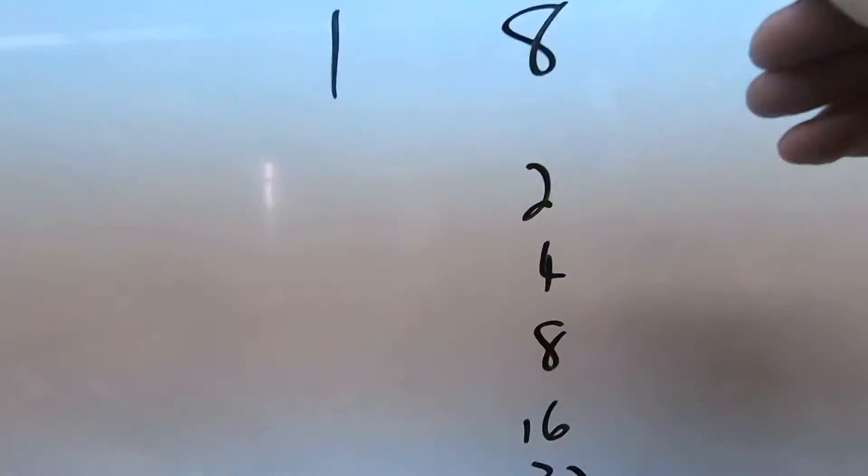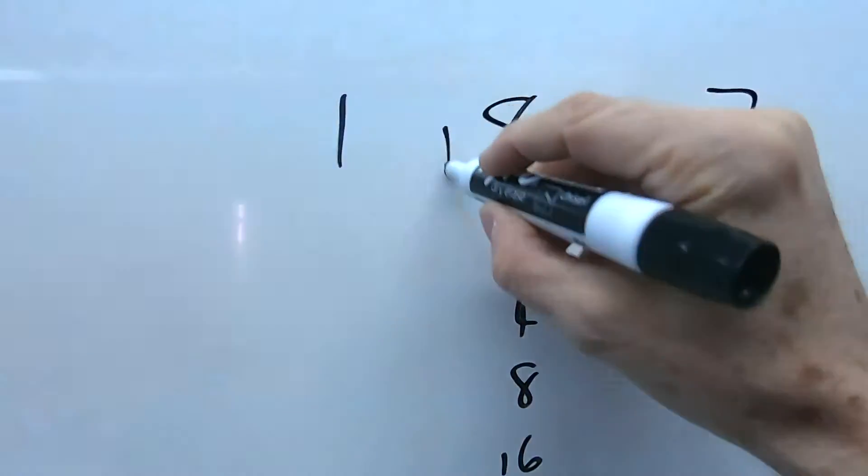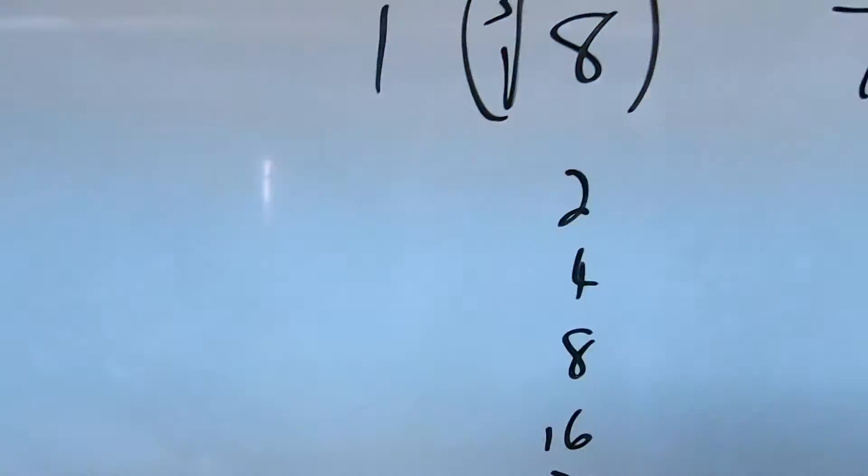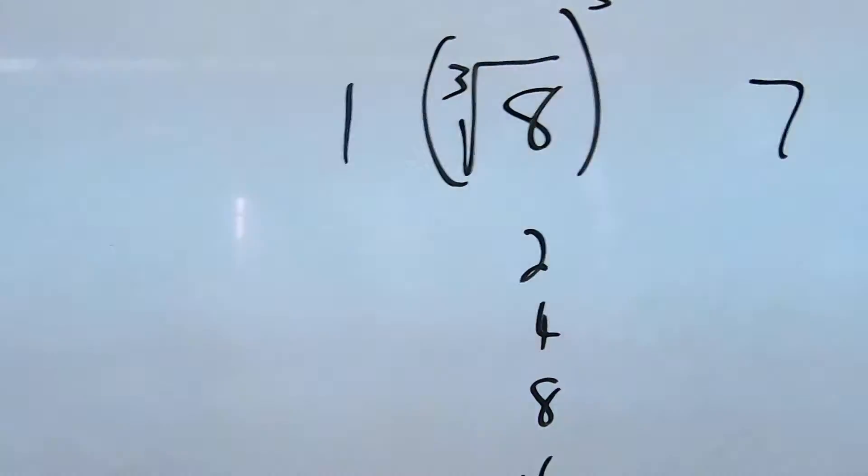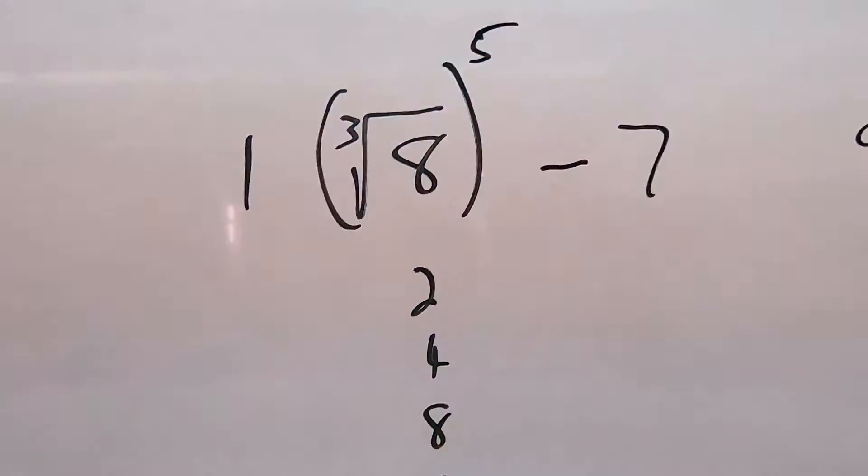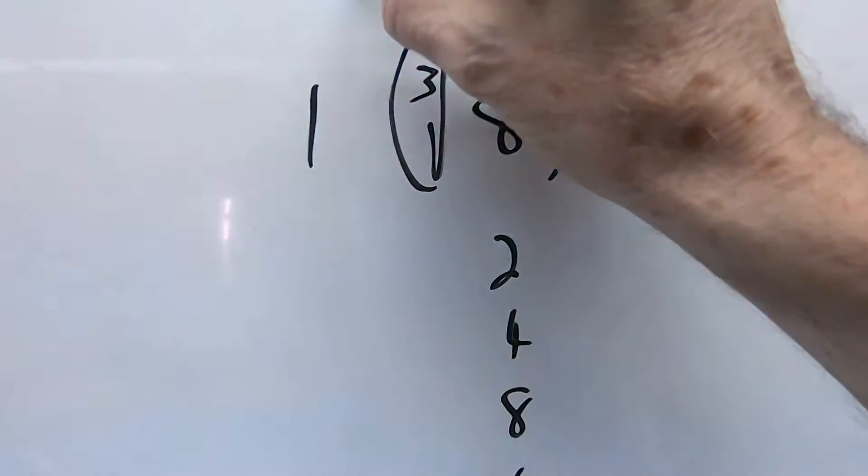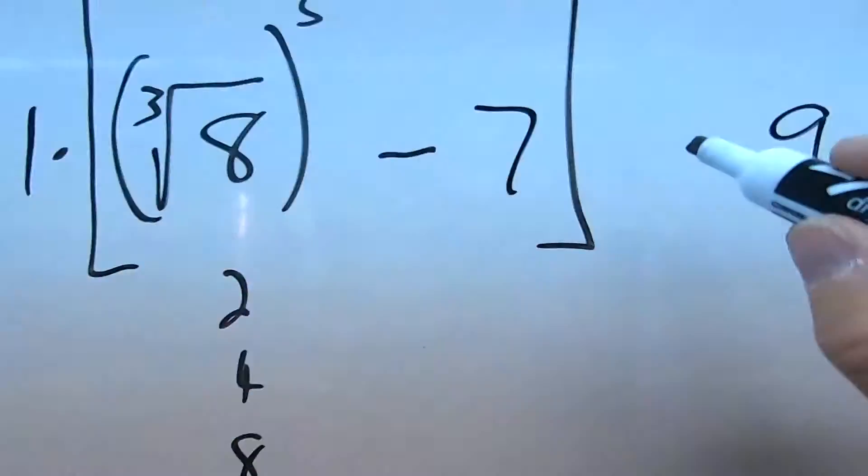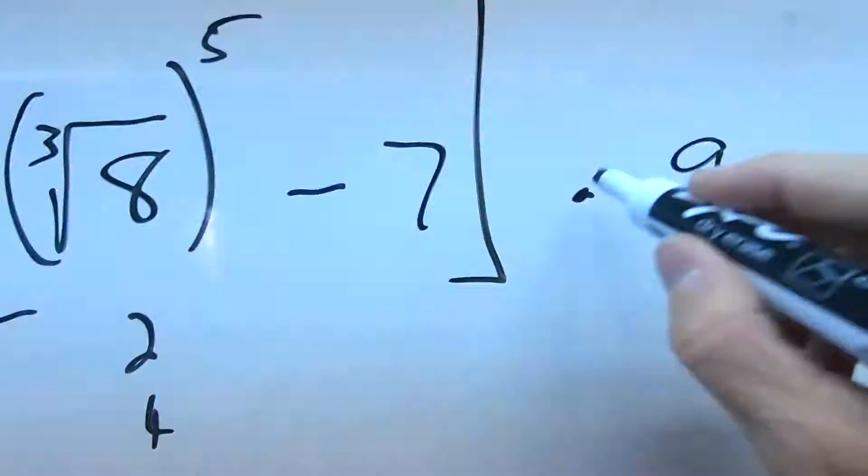We can see that the cube root of 8 to the 1, 2, 3, 4, to the 5th power is going to give me 32. And if I take away 7, that will give me 25. My outer brackets here, we're going to multiply 1 times that, and then simply times 1.